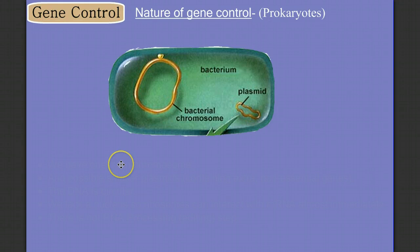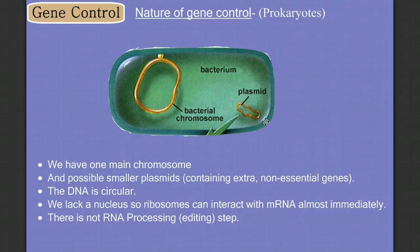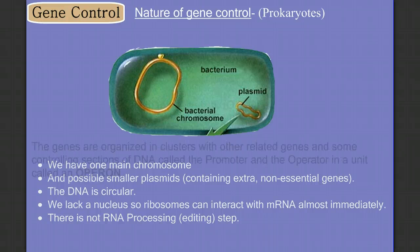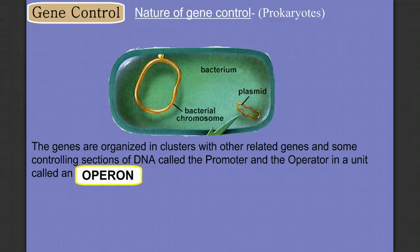A couple of things we need to remind ourselves about bacteria and their differences from eukaryotes. We have only our main chromosome, and sometimes extra smaller pieces of DNA with extra non-essential genes called plasmids. The DNA is circular rather than linear, and we have no nucleus, so the ribosomes can associate with the messenger RNA almost immediately after transcription. There's no RNA processing or editing step in bacteria. Genes are organized into clusters with related genes with controlling sections of DNA called the promoter and the operator, in a unit we call the operon.